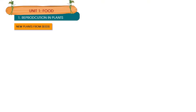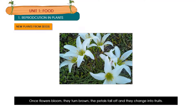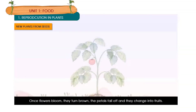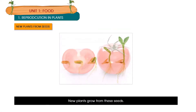Most plants bear flowers. Once flowers bloom, they turn brown, the petals fall off, and they change into fruits. Fruits have seeds inside them. New plants grow from these seeds.